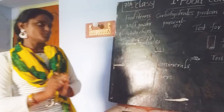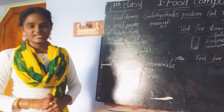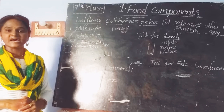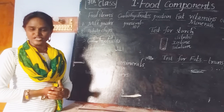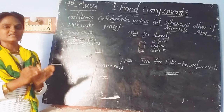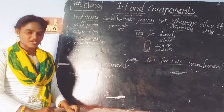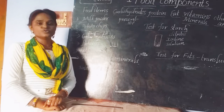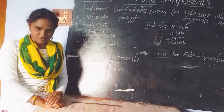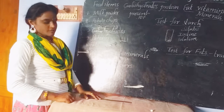For the starch test, we need dilute iodine solution. To prepare it, take a test tube and add a little amount of iodine solution to it, then add some water until the color of the iodine solution changes to brown. Now the dilute iodine solution is ready. Take some amount of this dilute iodine solution and add it to the sample you want to test — whether it is rice powder, biscuit, potato, or milk.